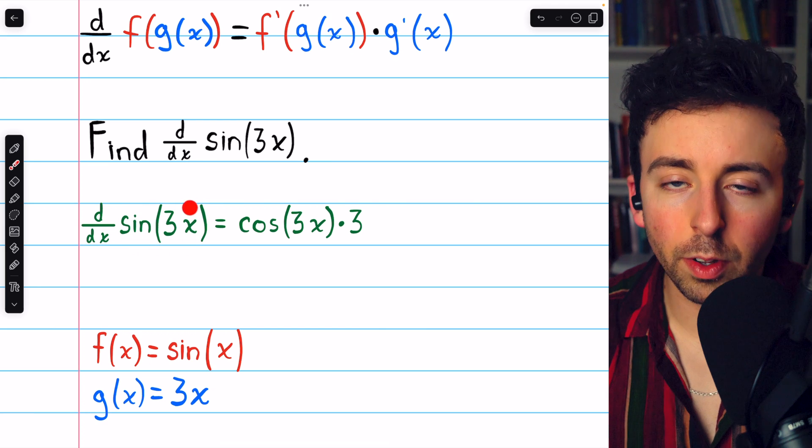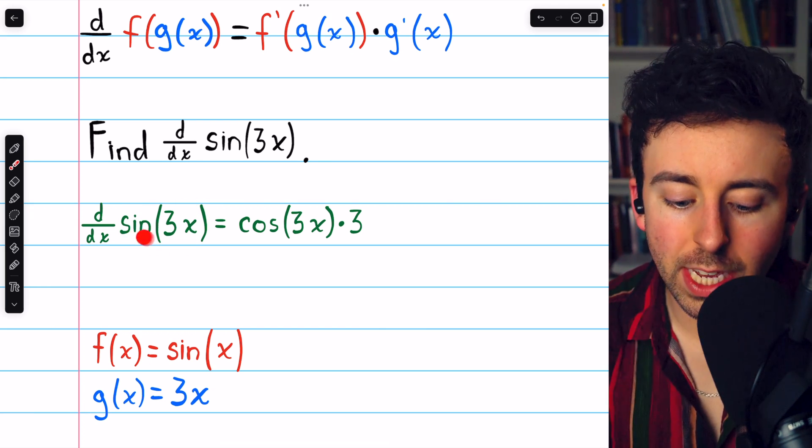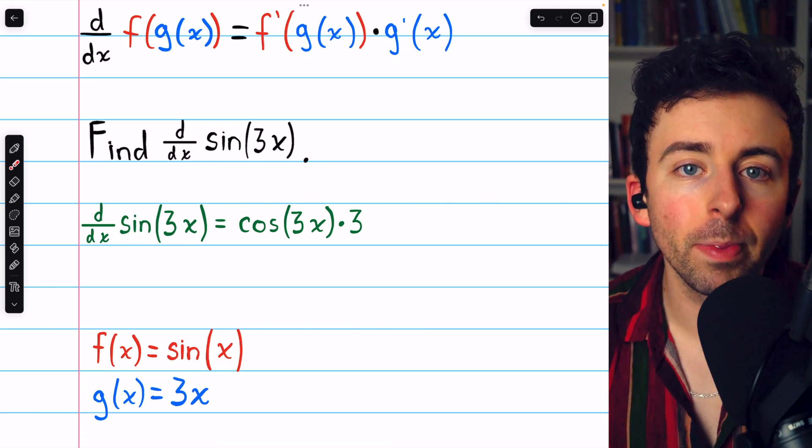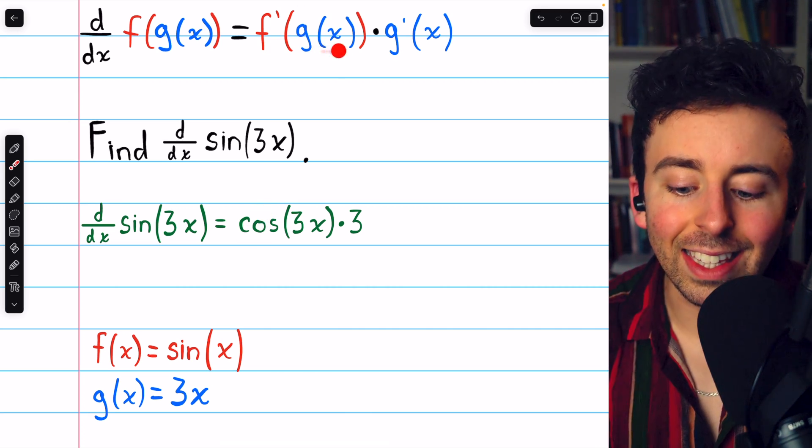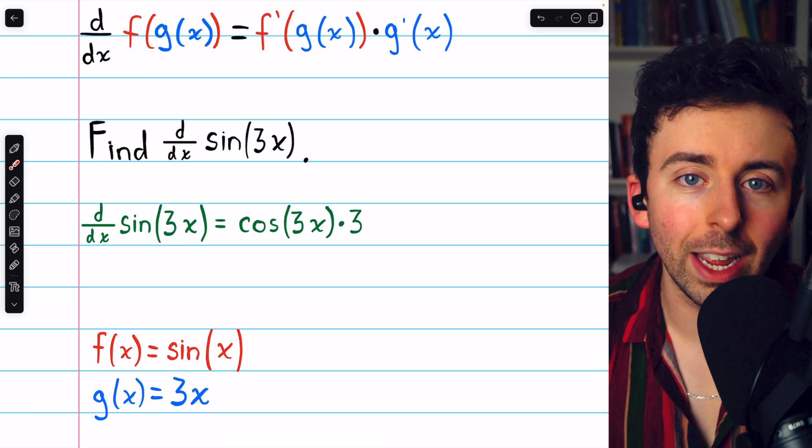So then to take the derivative, we begin with the derivative of the outside function, f prime. The derivative of sine is cosine. And remember, we need to leave the inside function, 3x, unchanged.